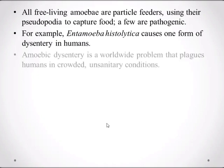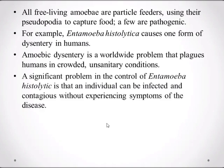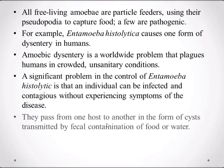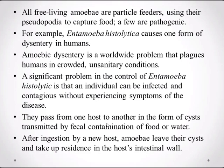For example, Entamoeba histolytica causes a form of dysentery in humans. This pathogenic amoebic dysentery is a worldwide problem that plagues humans in crowded, unsanitary conditions. A significant problem in the control of Entamoeba histolytica is that an individual can be infected and contagious without experiencing symptoms. They pass from one host to another in the form of cysts, transmitted by fecal contamination of food or water. After ingestion by a new host, amoeba leave their cysts and take up residence in the host intestinal wall.